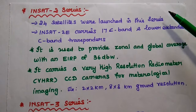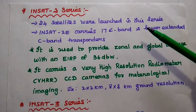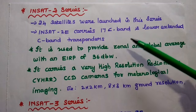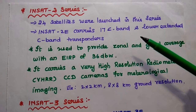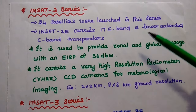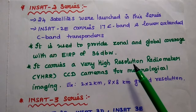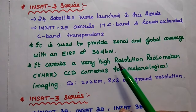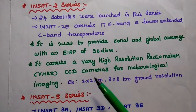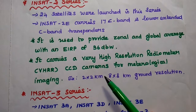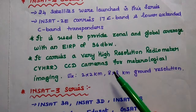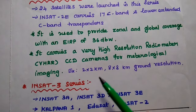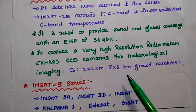Next is the INSAT-2 series. In this series, a total of 24 satellites were launched. The INSAT-2E satellite carries 17 C-band and extended C-band transponders as payload. It is mainly used to provide zonal and global coverage with an EIRP of 36 dBW. EIRP means Equivalent Isotropic Radiated Power, which is required for satellite transmission.